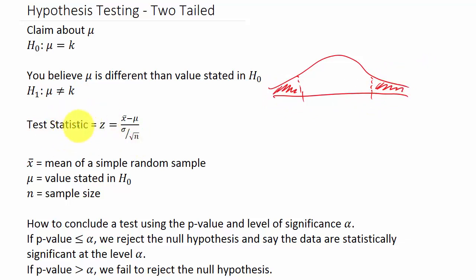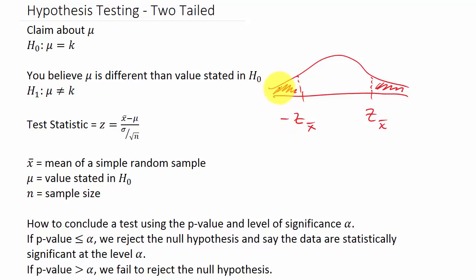We'll calculate a test statistic Z and we'll get either a negative or a positive value — either negative Z sub X-bar or positive Z sub X-bar. If it's negative, we look that up and that gives us the left-tail area, then we double it because on a normal distribution it's symmetrical, so we multiply by two.